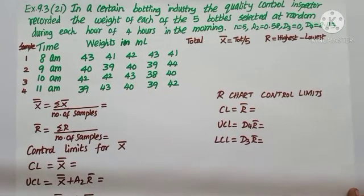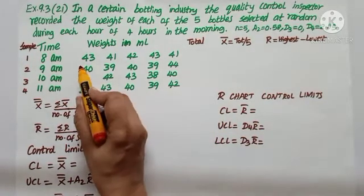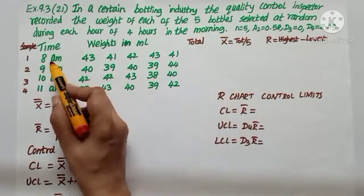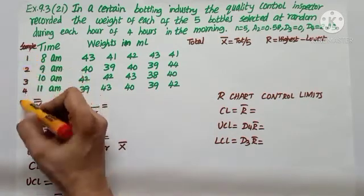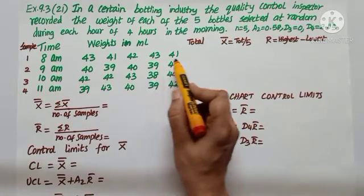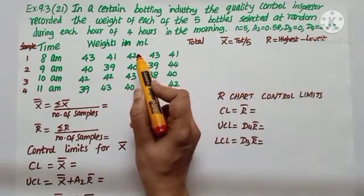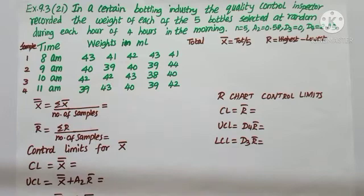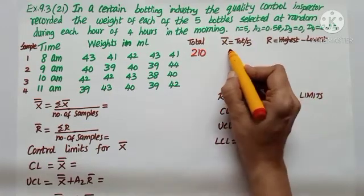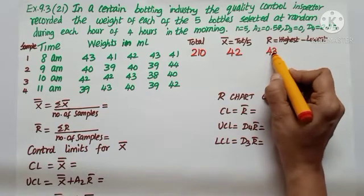Question number 21: here we are not given x-bar and r directly; instead, the raw sample data are given. Five bottles are weighed every one hour in the morning, done four times. Number of samples is 4, each of size 5. Find the total and divide by 5 to get x-bar; range equals highest minus lowest. Adding the first row gives 210, divide by 5 to get x-bar equals 42. The highest value is 43 and lowest is 41, so the range is 2.